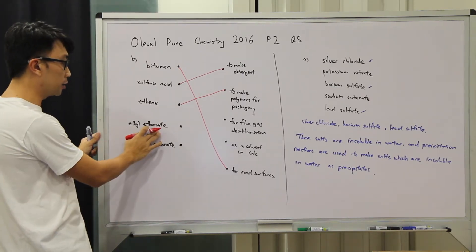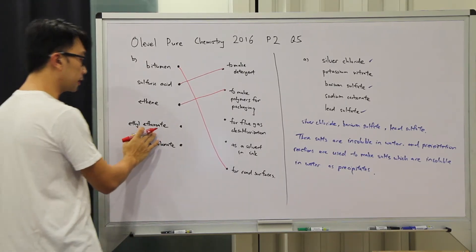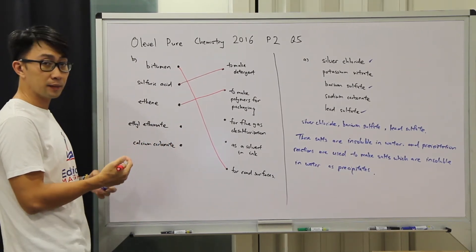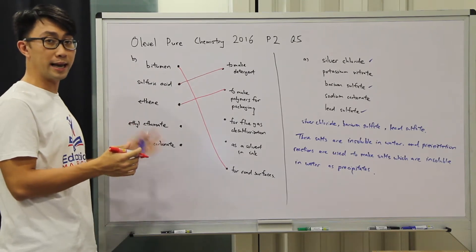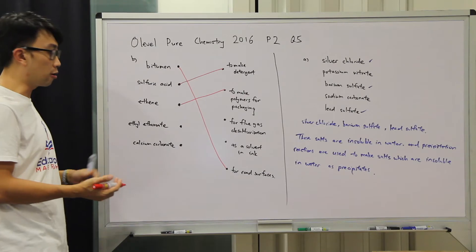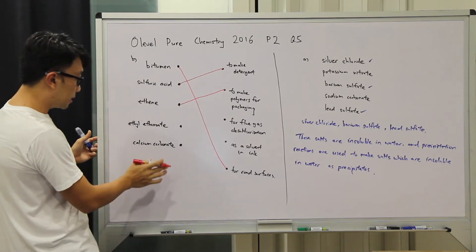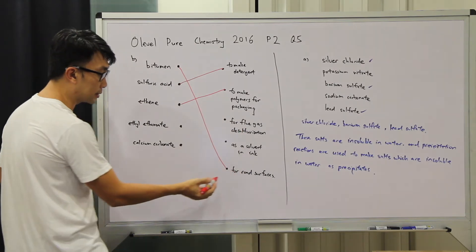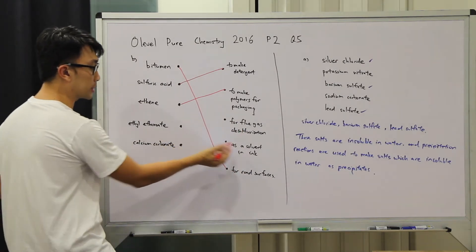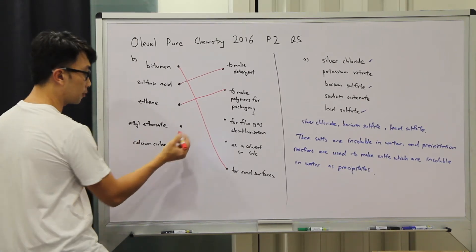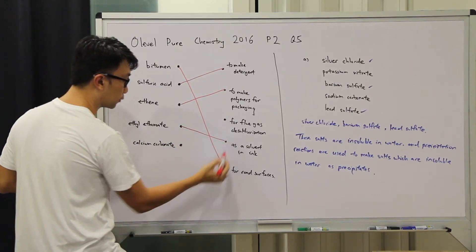Next we have ethyl ethanoate. For students who will understand, it's an ester. Ester comes from the reaction between carboxylic acid and alcohol. If we choose between the two uses, it will be put to better use as a solvent because organic compounds can only be dissolved in organic solvent.